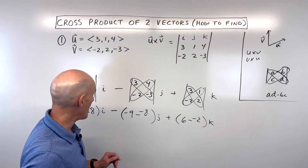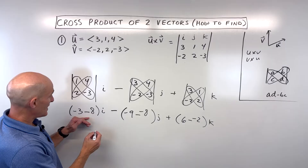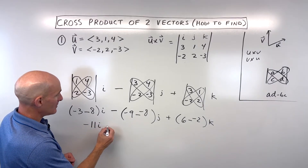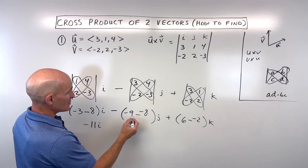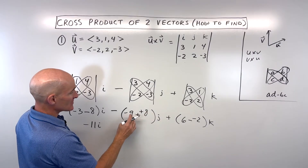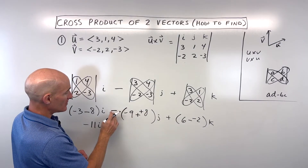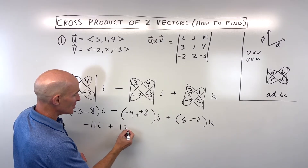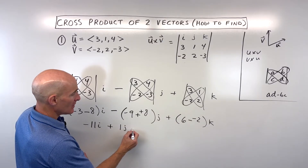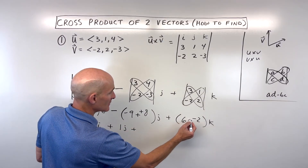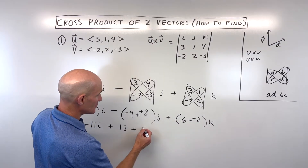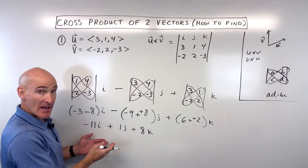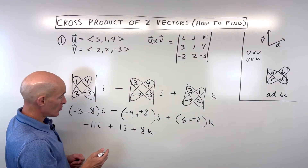Let's go ahead and simplify. Negative three minus eight gives us negative eleven i. When you subtract it's like adding the opposite, so negative nine plus eight is negative one, times the negative is positive one j. Plus six minus negative two is like six plus positive two, that's eight k. That's our cross product.